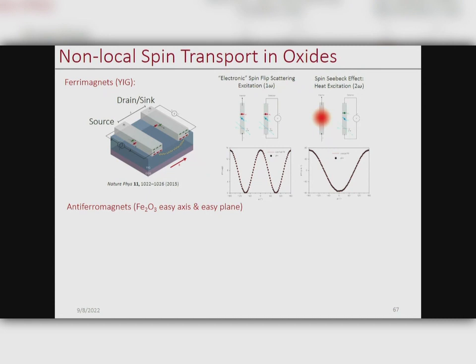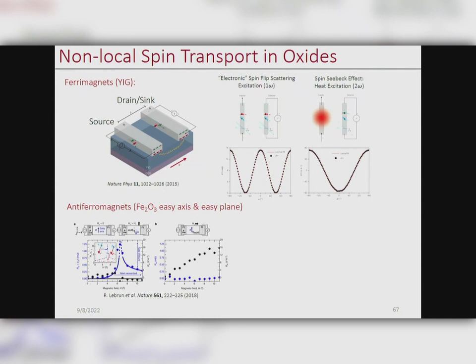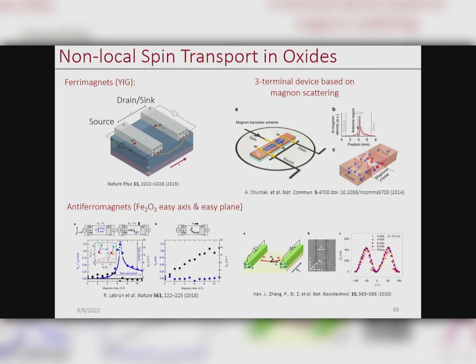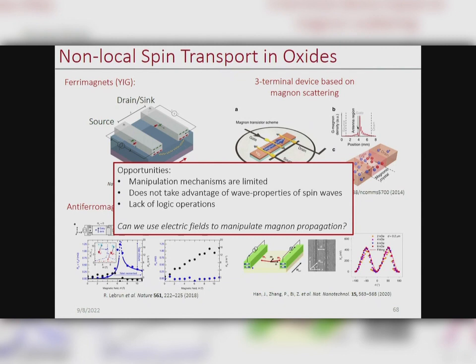More recently this non-local geometry was also seen in antiferromagnets. Everybody's favorite material, hematite, has been used quite a bit — both in the easy axis and easy plane geometry — to inject and detect spin waves. What I want to highlight is the ways of manipulating spin waves from point A to point B. Often we use magnetic fields — in YIG to control magnetic orientation, controlling what types of spins are injected and detected, and in hematite using fields in the spin-flop regime to control the Néel vector. There have been good means of manipulating magnons using gates as well, taking advantage of the wave properties of magnons. But manipulation mechanisms are somewhat limited, and I think there's opportunity to take advantage of the logic operations of spin waves.